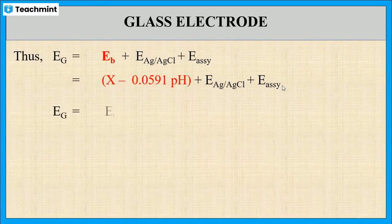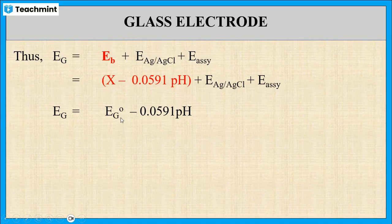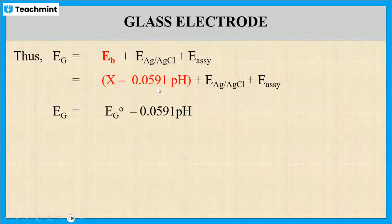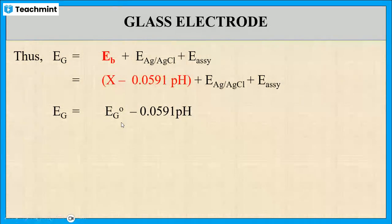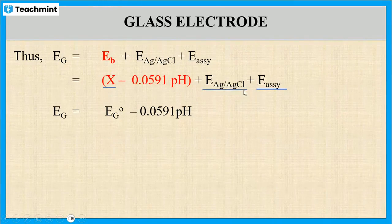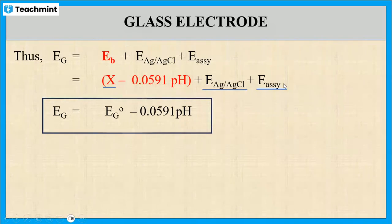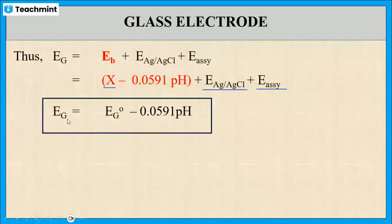Substituting the formula for boundary potential into this expression, it becomes: Eg = X - 0.0591 × pH + E(Ag/AgCl) + E_asym. This can be simplified as Eg = Eg⁰ - 0.0591 × pH, where Eg⁰ is the sum of X, E(Ag/AgCl), and E_asym. By using this expression, we can calculate the glass electrode potential.